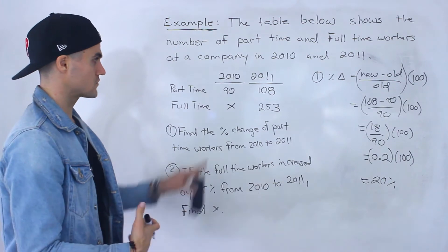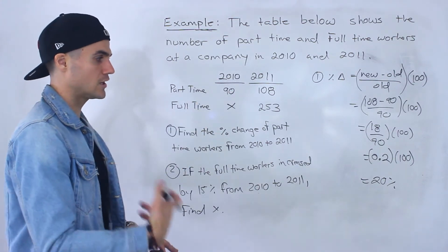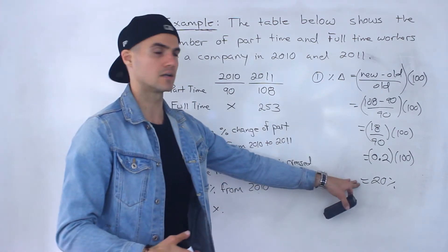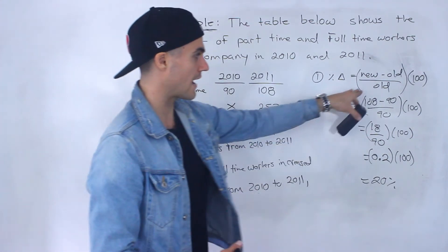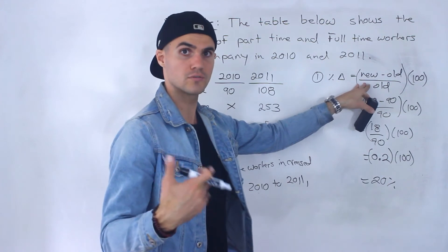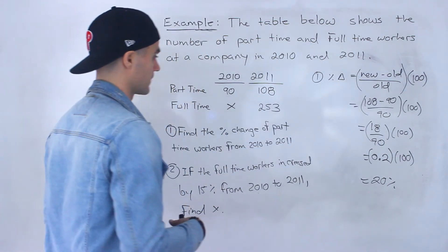So the number of part-time workers from 2010 to 2011 increased by 20 percent. You're always using this formula for percentage change. Remember that you're dividing by the old value, the base value that you're working from. So that's the answer for number one, 20 percent. Let's just circle it over here and then number two.